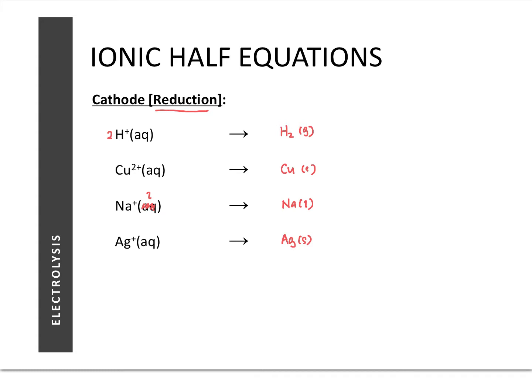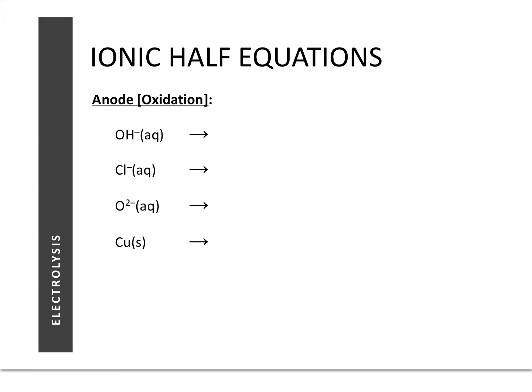Another way to remember: the ions at the cathode are all positively charged, so they attract electrons — we add electrons to the positive-charge side. We must add enough electrons to cancel out the charges completely. For the anode, it attracts anions, and oxidation occurs there, so we need to know what each anion is oxidized to.